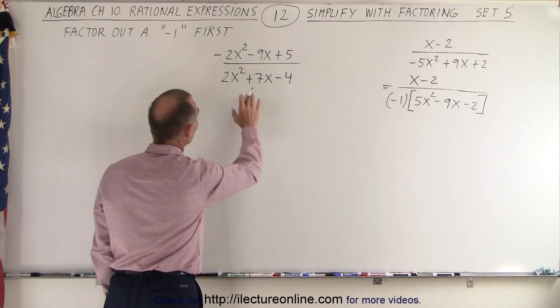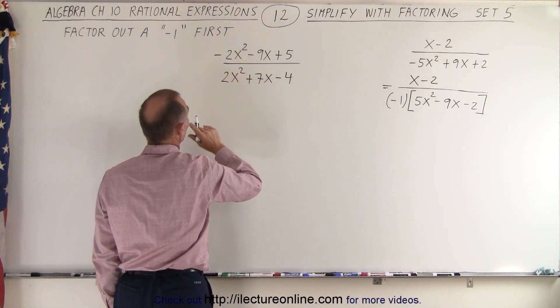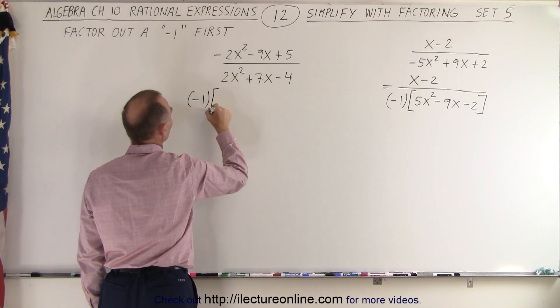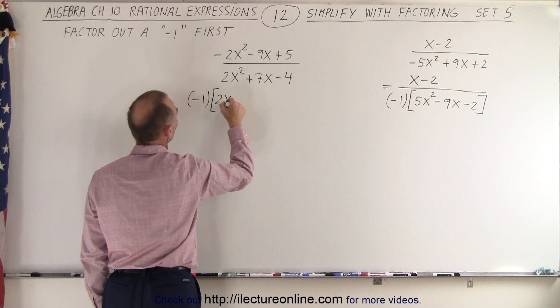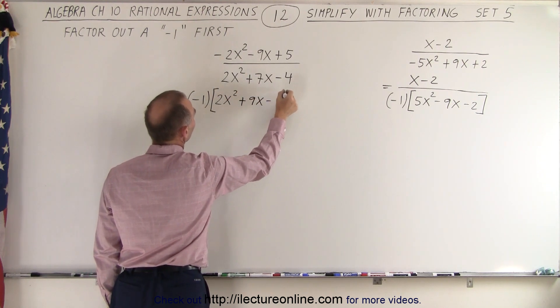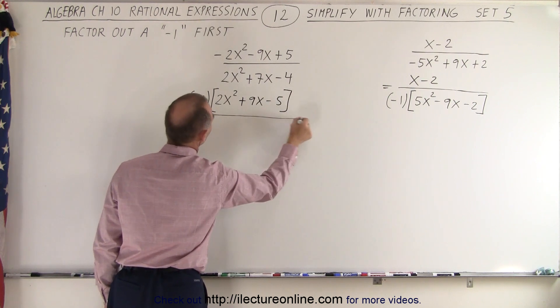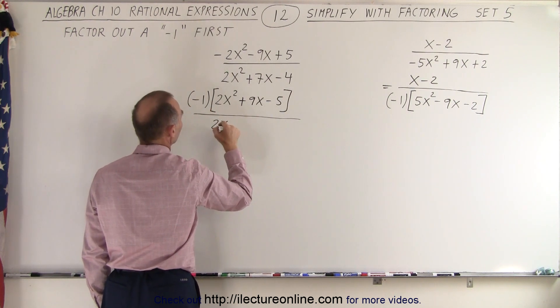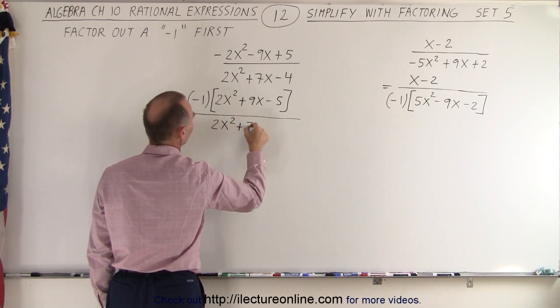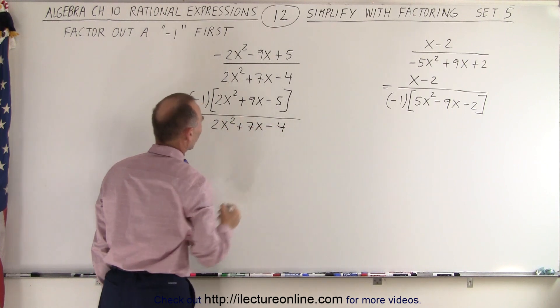We're going to do the same over here. We're going to factor out a negative 1 out of the denominator, so this becomes negative 1 times what we have left is a positive 2x-square, and that becomes a positive 9x and a negative 5. In the denominator we leave everything alone, because we start out with a positive first term, 2x-square plus 7x minus 4.